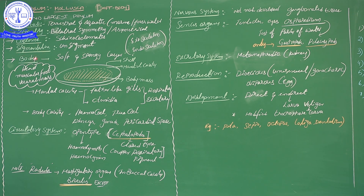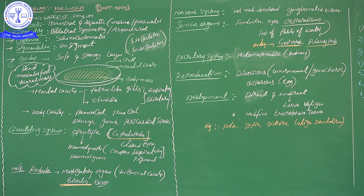Segmentation — also called metamerism. In mollusca, the body does not have any segmentation; it is unsegmented. Comparing mollusca with arthropoda: arthropoda shows segmentation, but mollusca shows an unsegmented body. Arthropoda organisms show bilateral symmetry, but some mollusca organisms show asymmetry. So generally mollusca is a developed phylum, but some characteristics are not yet fully developed.